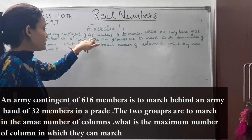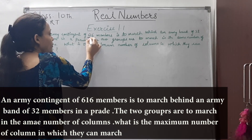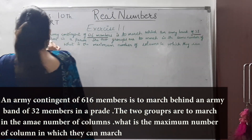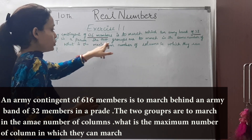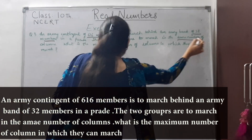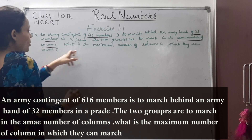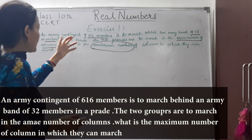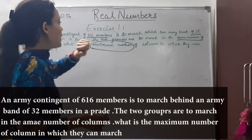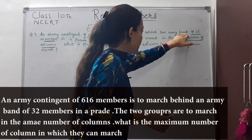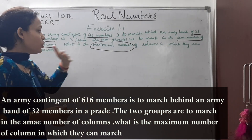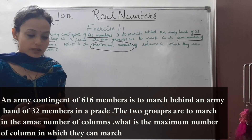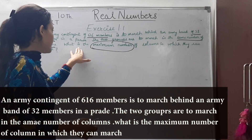An army contingent of 606 members is to march behind an army band of 32 members in a parade. The two groups are to march in the same number of columns. What is the maximum number of columns in which they can march? So we have 606 members of the army and 32 members in the army band, and both groups will march in the same number of columns.